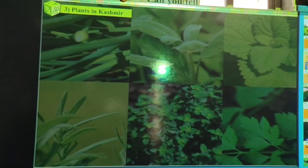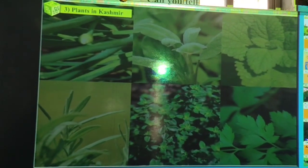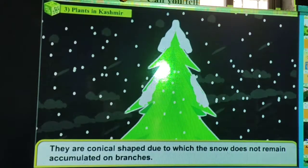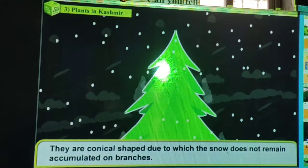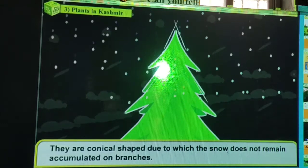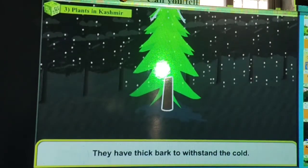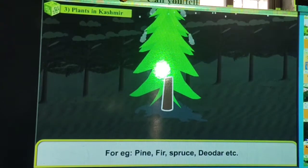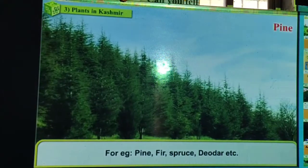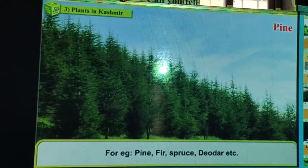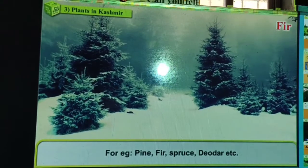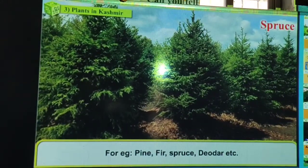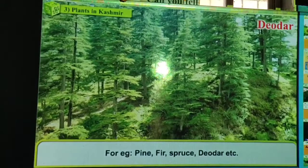Plants in Kashmir are conical shaped, due to which snow does not remain accumulated on them — snowfall is always there. They have thick bark and snow slips down easily. For example, pine, spruce, deodar, etc. That is why they are called coniferous forests.